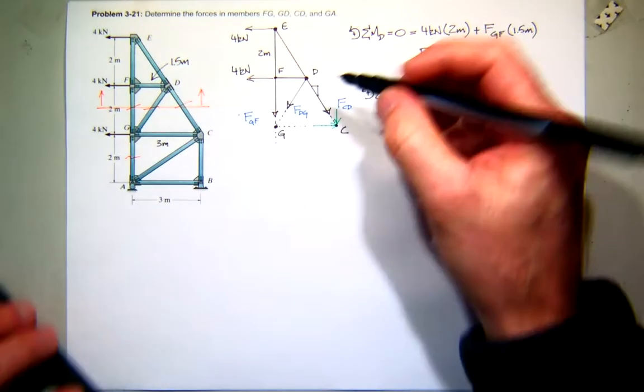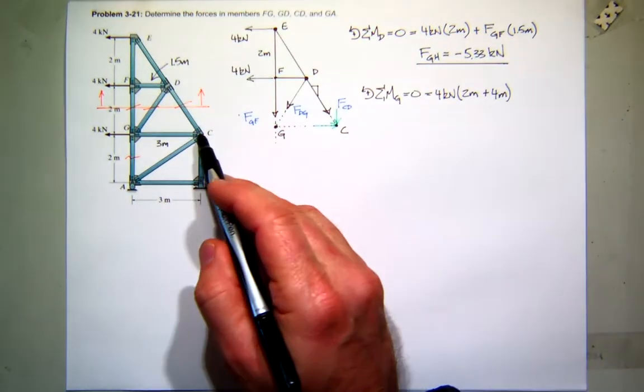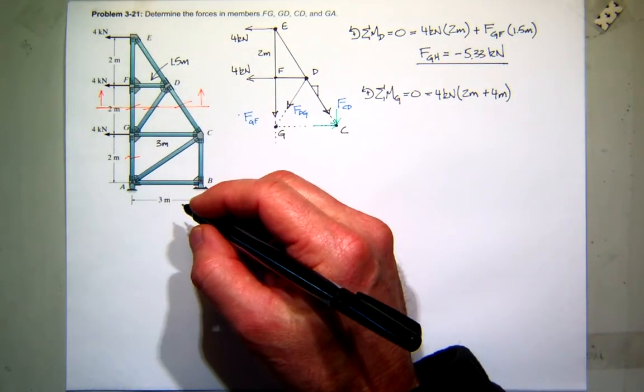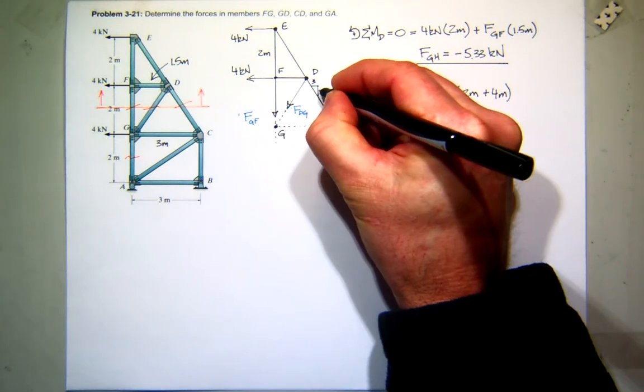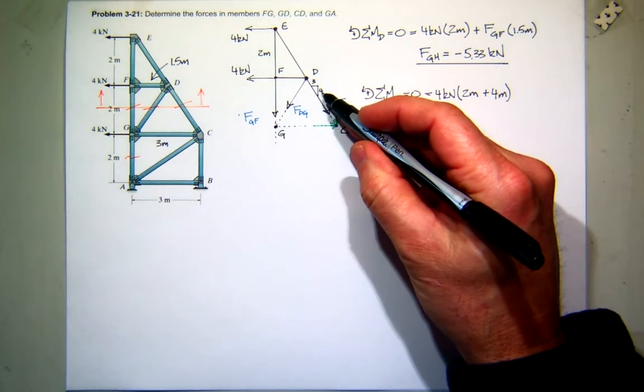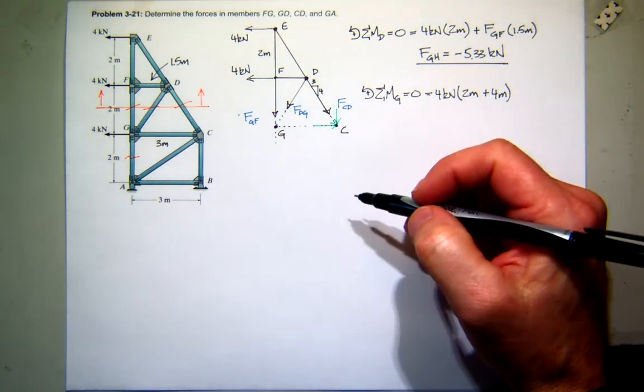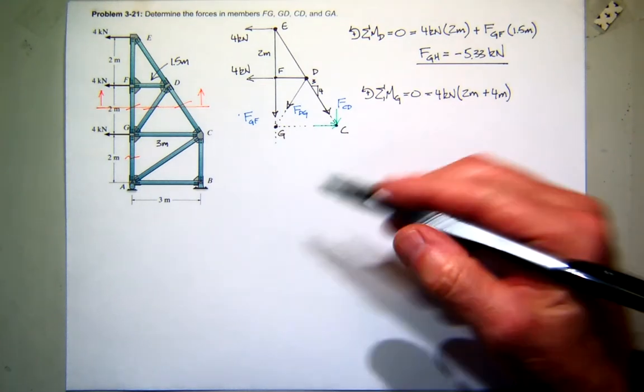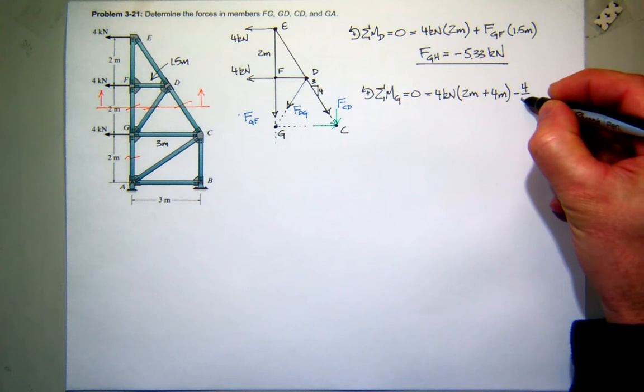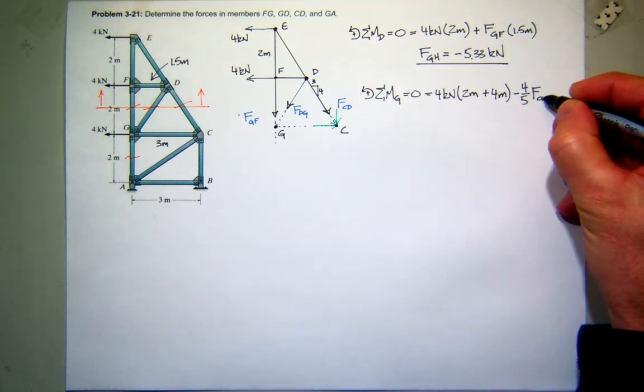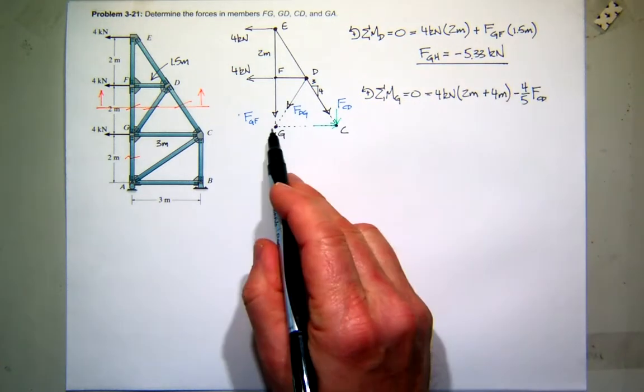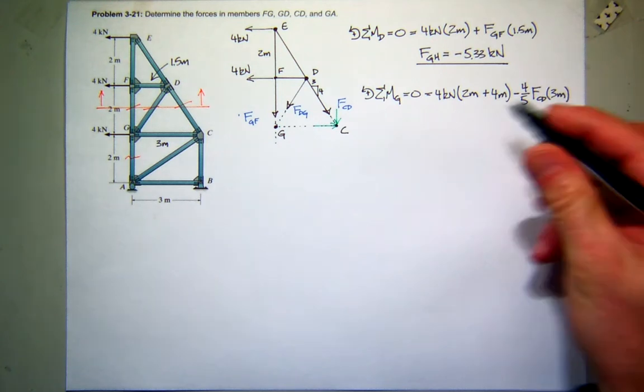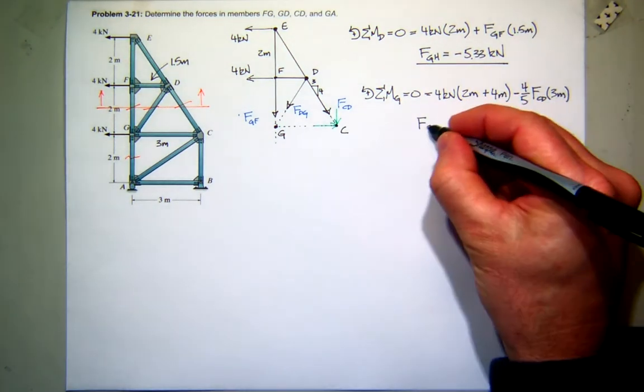So to do that I'll go ahead and look at the geometry of that line. So looking at this line here, it looks like I have a run of 3 to a rise of 4. Hey it's a 3-4-5 triangle, how convenient, right? So 3 to 4, and we want the vertical part so that would be the 4, so it would be 4/5. And it's acting down. So what kind of moment is that about G, positive or negative? Negative. So it would be negative 4/5 of CD, that's the vertical component, and then the moment arm would be this distance which is here, which is 3. So I should be able to solve for the force in CD, and just looking at the signs it looks like it's going to be positive.